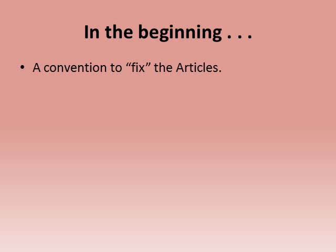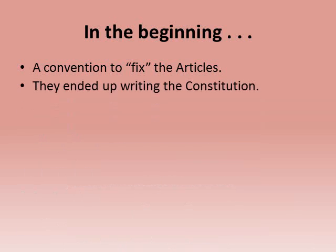A convention was called to fix the Articles, but when representatives got together, they shut themselves behind closed doors and agreed the Articles couldn't be fixed — they needed to start over from scratch. This became the Constitutional Convention. They created a national governmental system strong enough to protect from external threats, while also giving enough power to the different states. The Constitution ended up with three branches of government — judicial, executive, and legislative — to ensure power wasn't concentrated too much in any one spot.